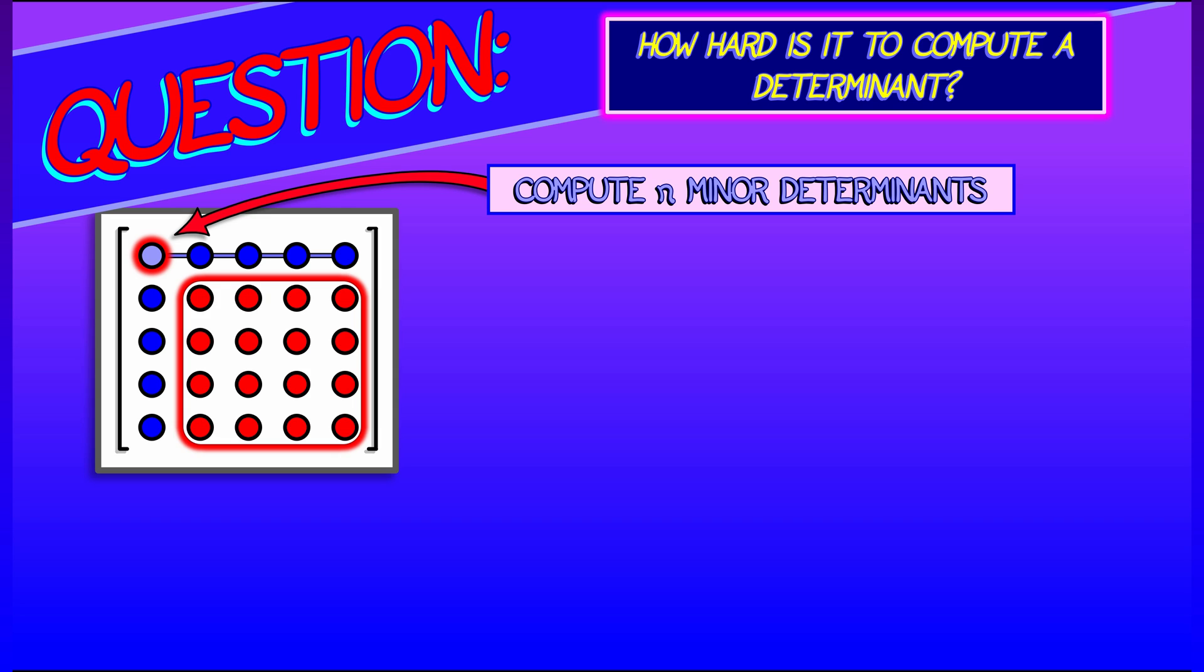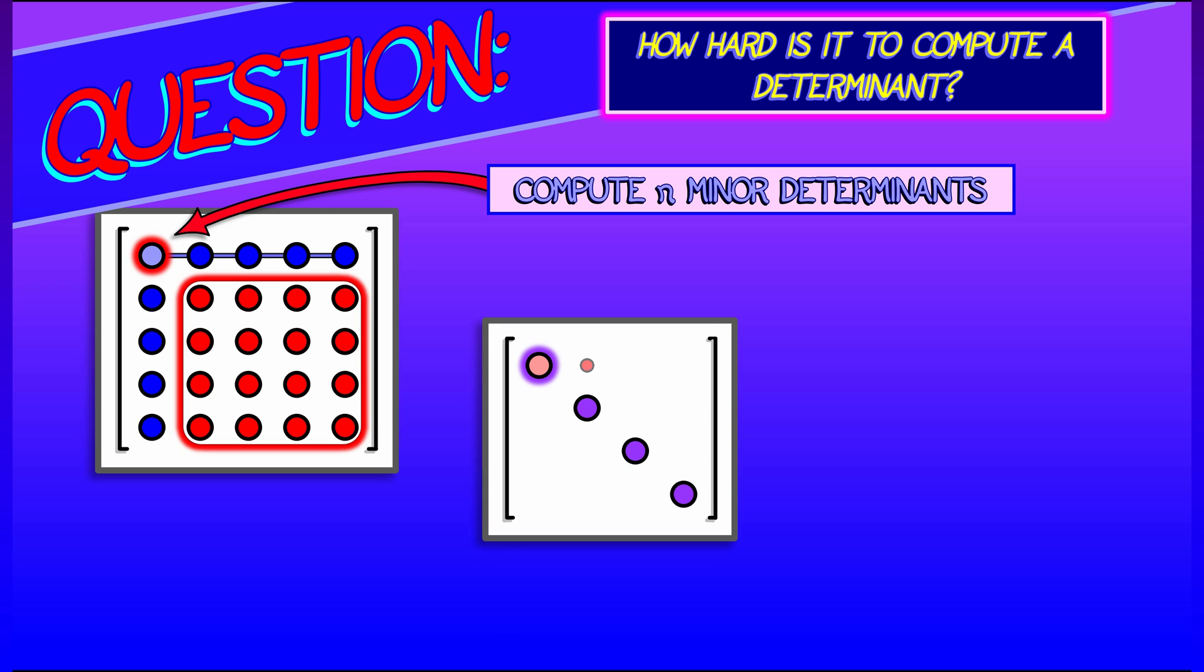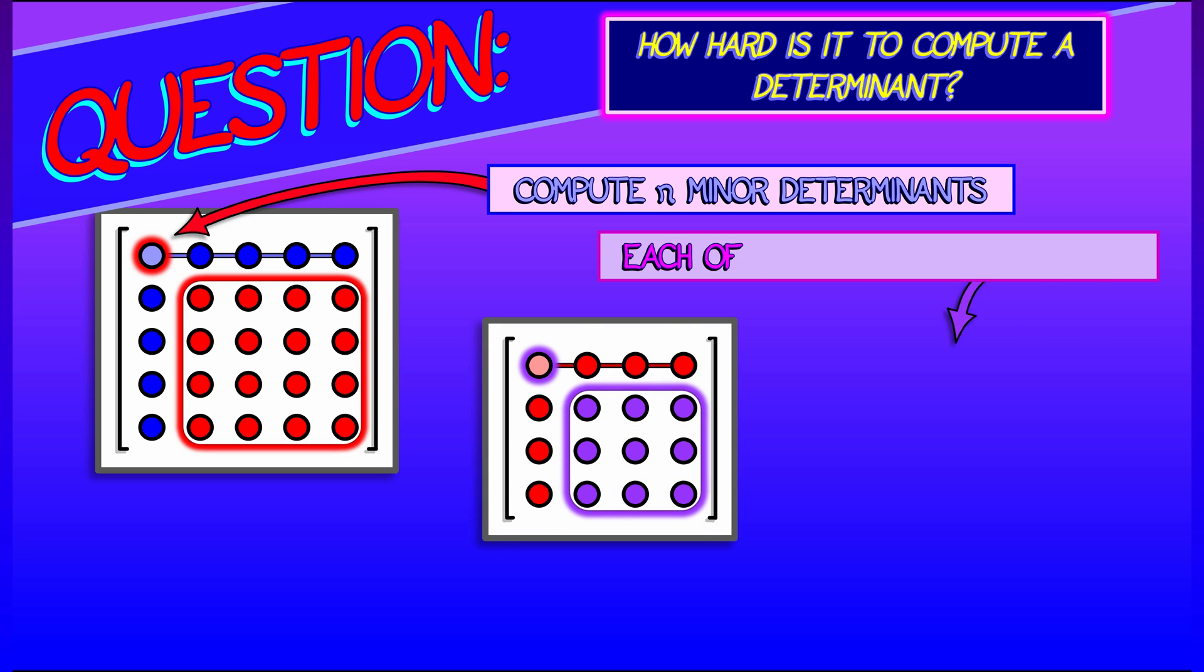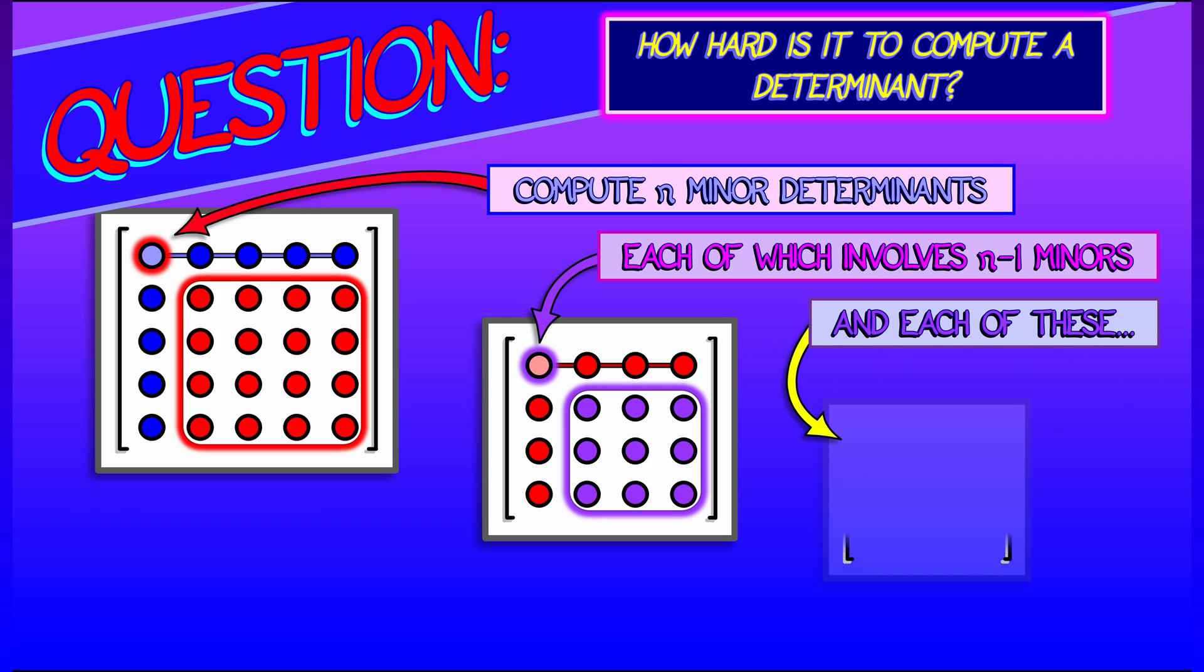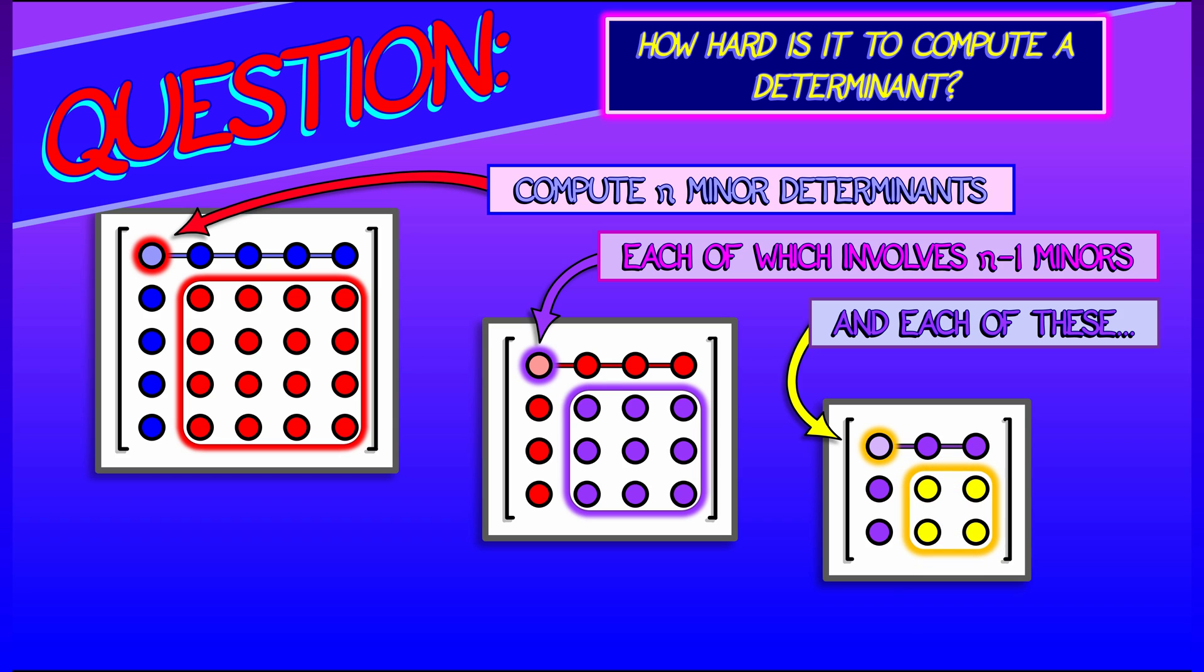For each term in that row, you have to compute the minor determinant of an n minus one square matrix. And for each of those, then you have to do an expansion and compute a determinant of an n minus two square matrix. And you keep going and you keep going. That's a lot of computations.